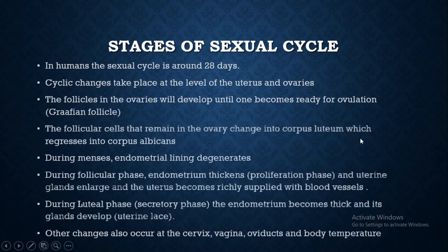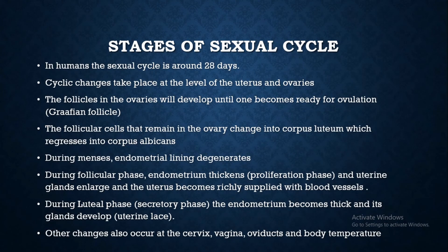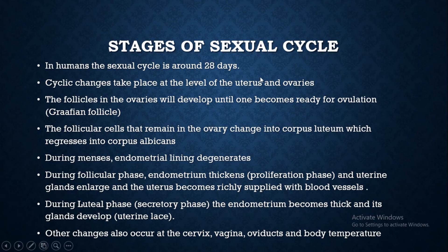Stages of the sexual cycle. In humans, the sexual cycle takes around 28 days, and it might differ from around 25 to 35 days, which is actually normal. There are lots of cyclic changes that take place at the level of the reproductive system of the female. The most important changes take place at the level of the uterus and at the level of the ovaries.